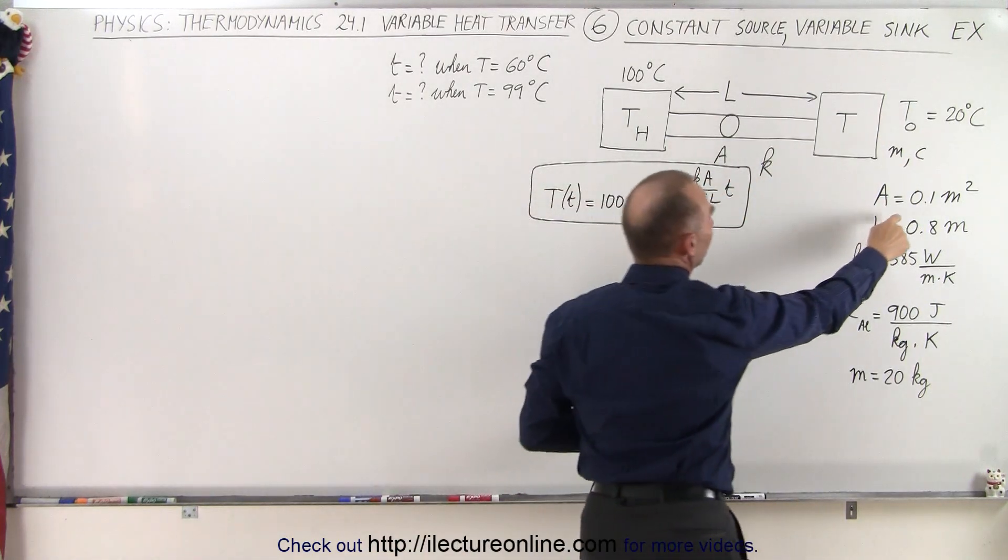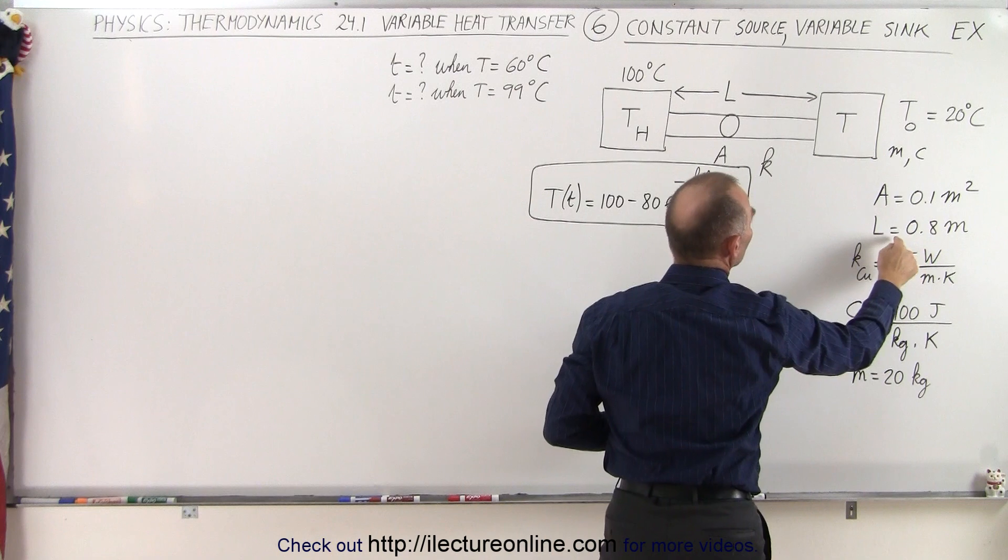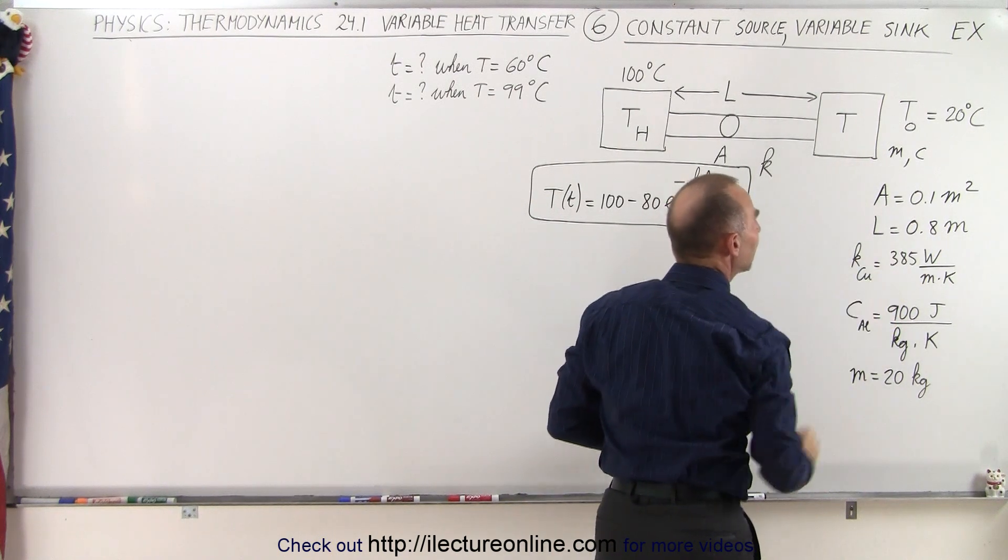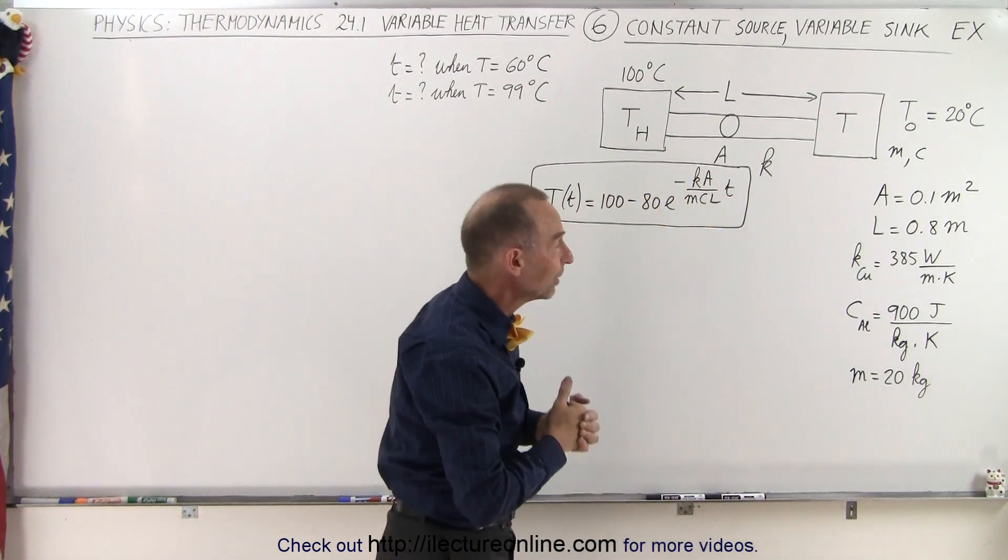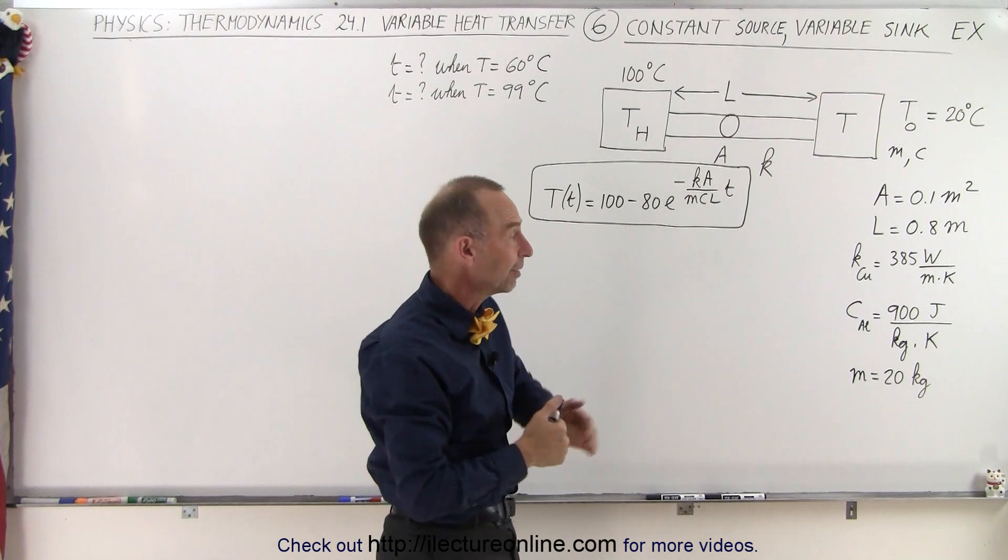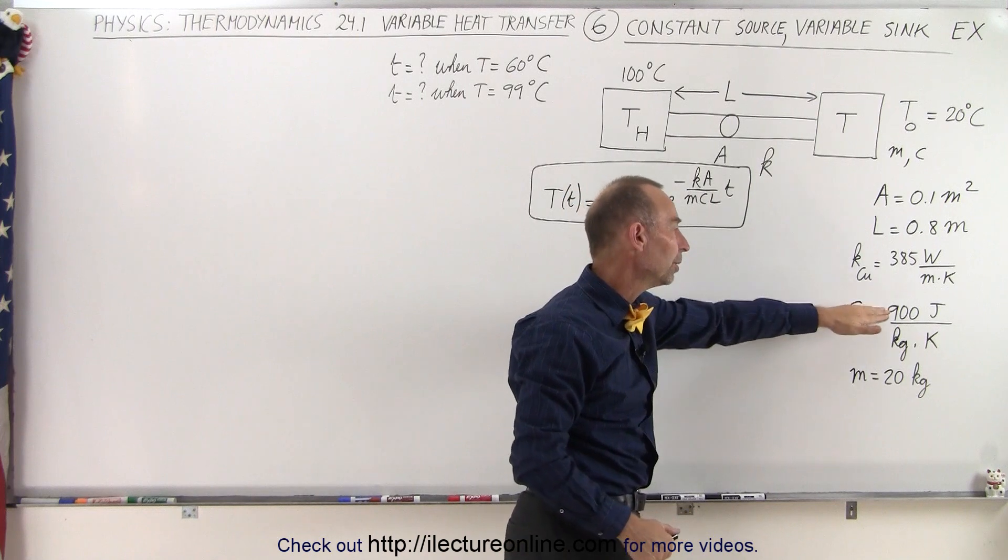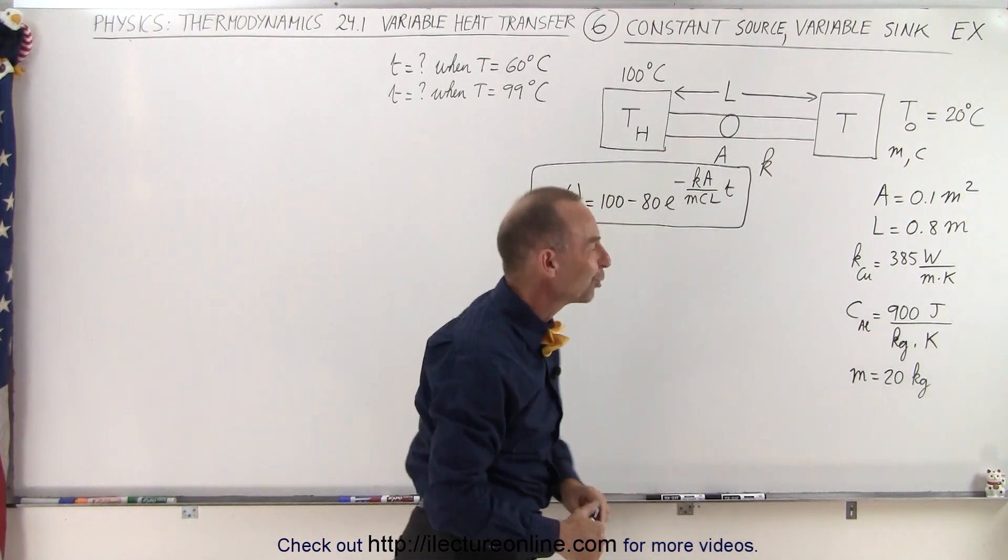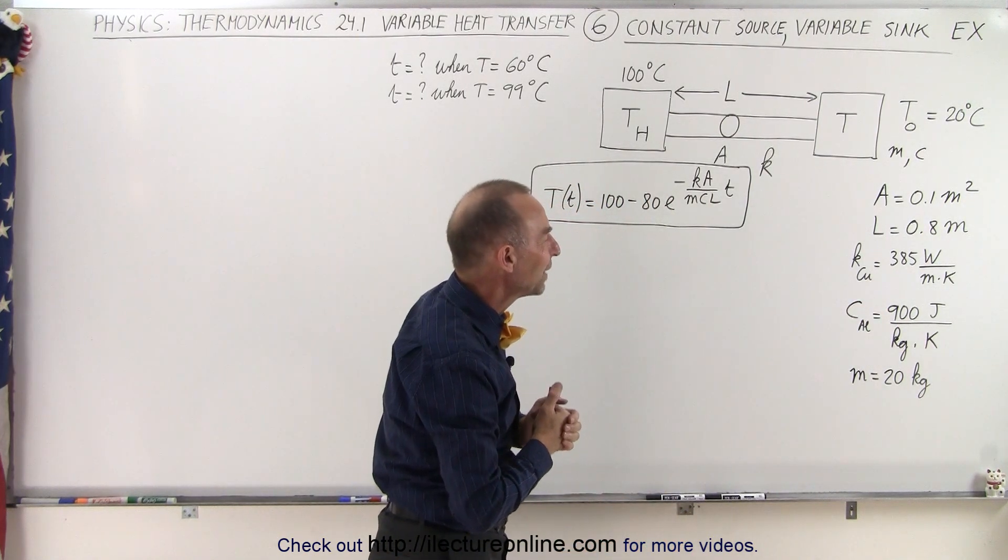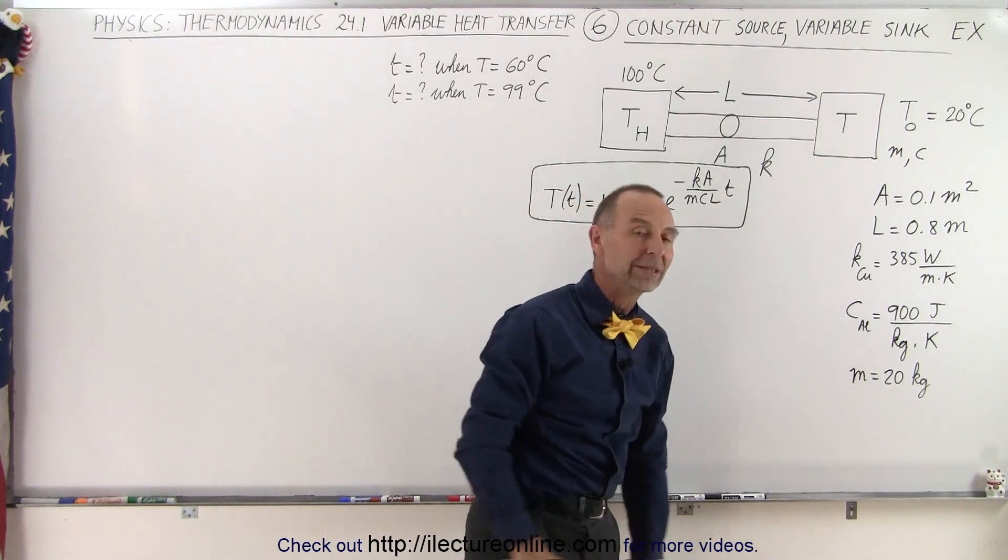Notice the cross-sectional area of the conducting pad is 0.1 square meters, the length is 0.8 meters, the heat conductivity constant is 385 watts per meter per kelvin because it's made out of copper, the specific heat of the heat sink made out of aluminum is 900 joules per kilogram per kelvin, and the mass is 20 kilograms.